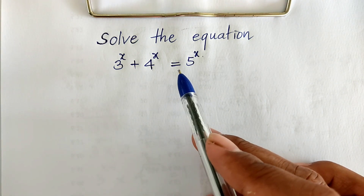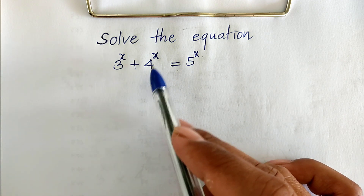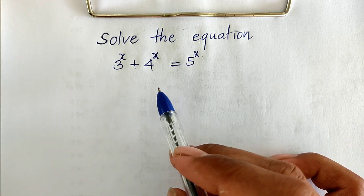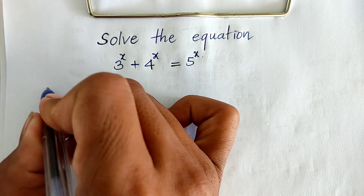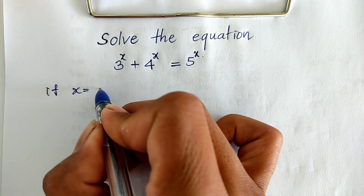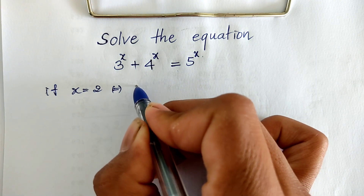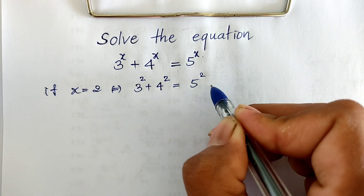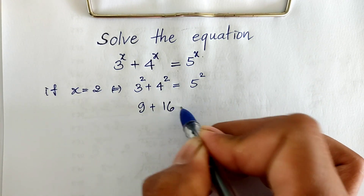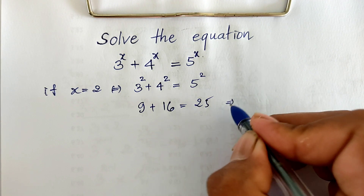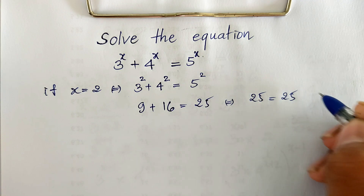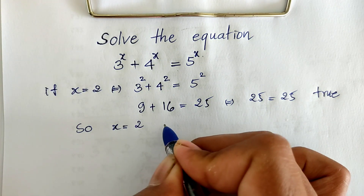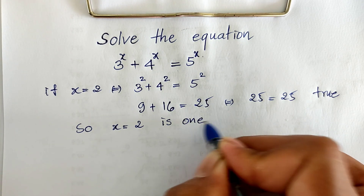We have the equation 3 power h plus 4 power h equals 5 power h. Our equation has different bases. To solve this, I replace h by 2. If h equals 2, I get 3 squared plus 4 squared equals 5 squared, and we get 9 plus 16 equals 25, and 25 equals 25 — it's true. So h equals 2 is one solution.